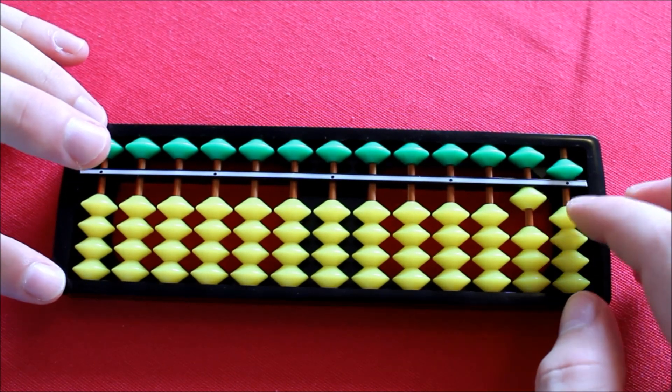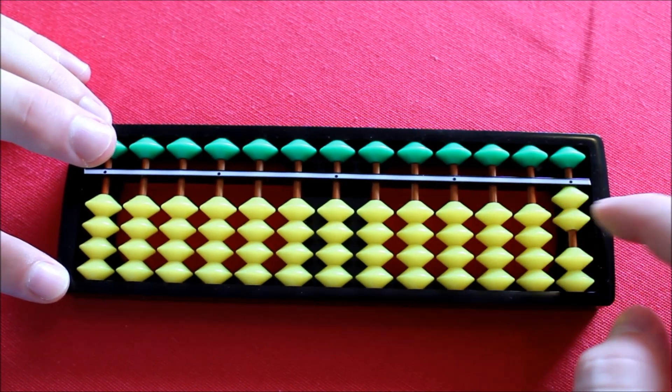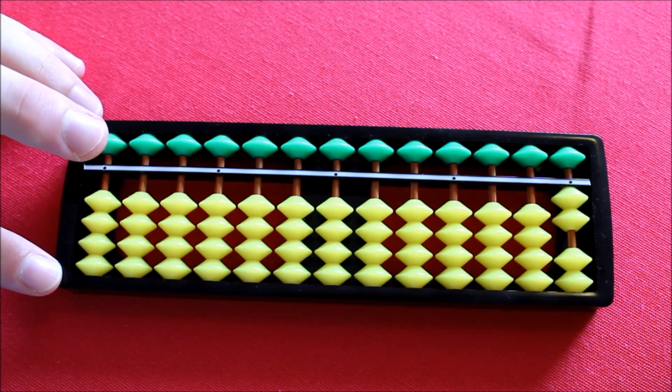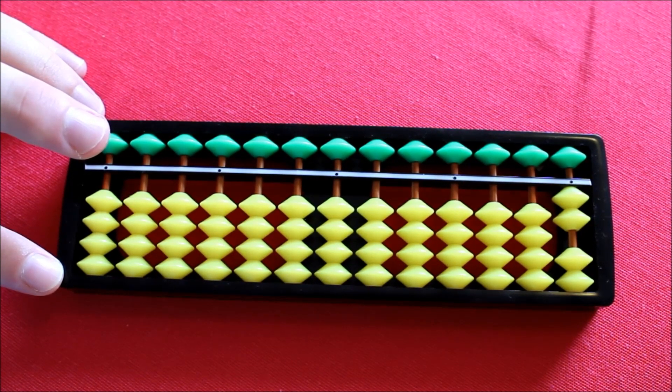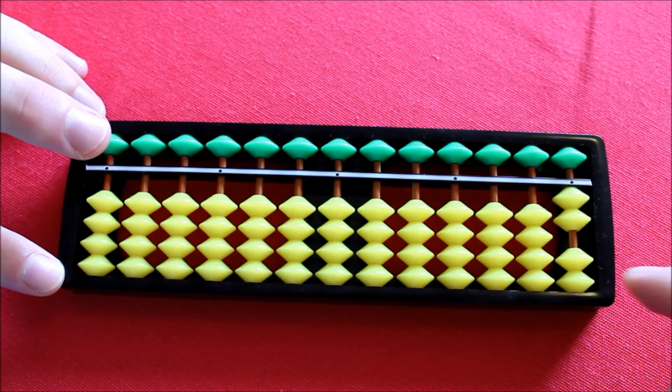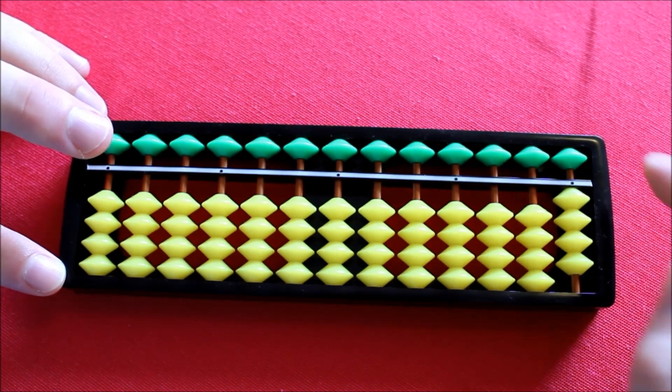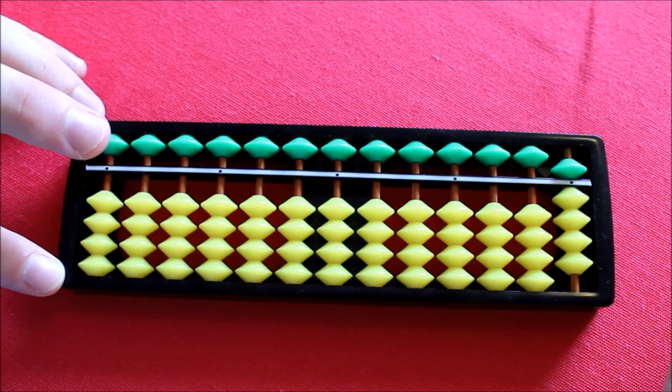So let's move on to 7. For a change, I'll start with 2 on the Soroban. What's 2 plus 7? Have we got enough beads to use the first column only? Well, yes, we do, because we've got 2 here and 5 here. 2 plus 7 is 9.